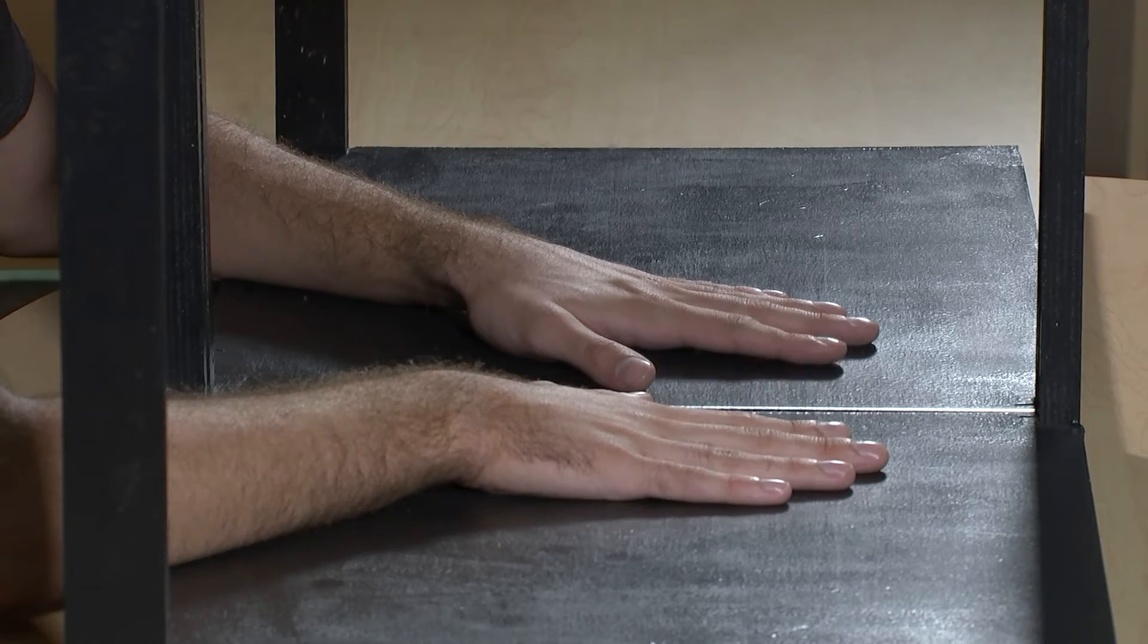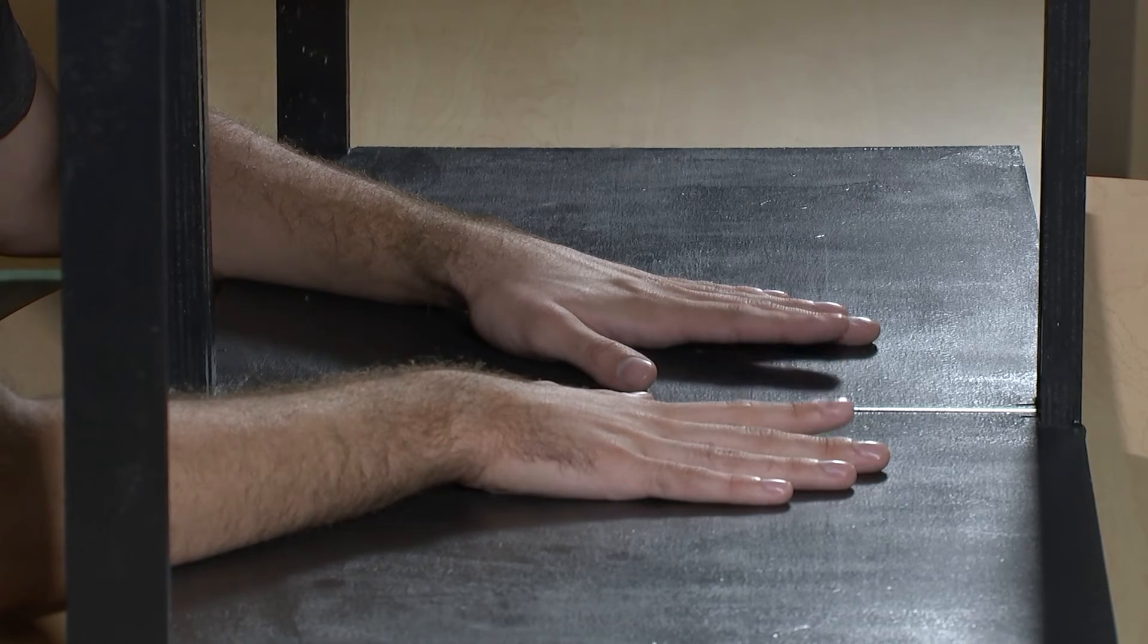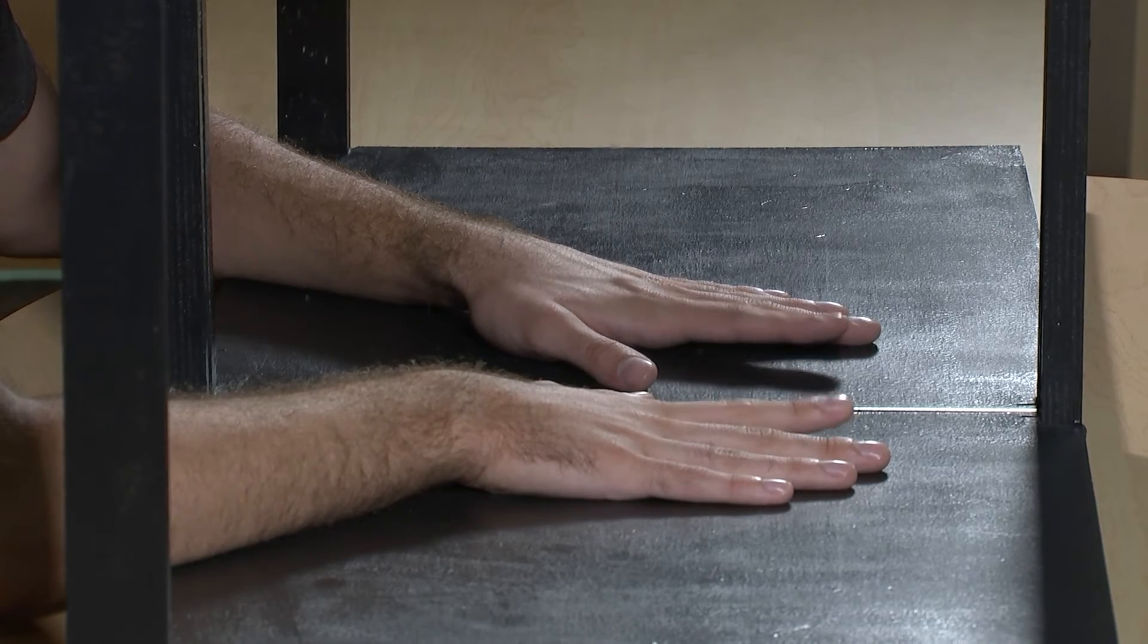So what's happening right here is that we've got this illusion we've created where there's a conflict between visual information and proprioceptive information. So with the visual information, what you have is that it looks like his hand is right next to the mirror. But proprioception, which is the sense of where his body is in space, is telling him that his hand is about a foot away from the mirror right now.